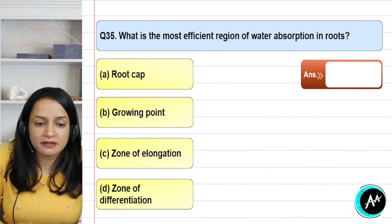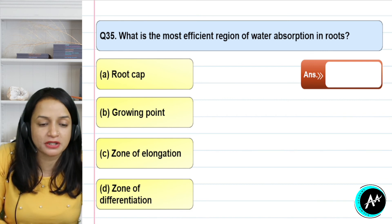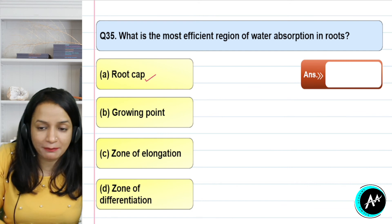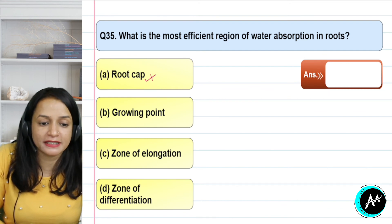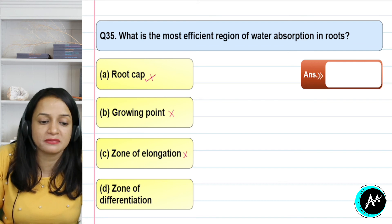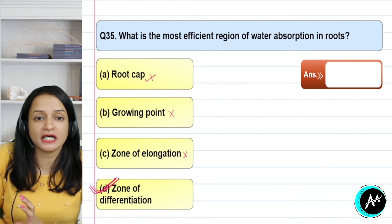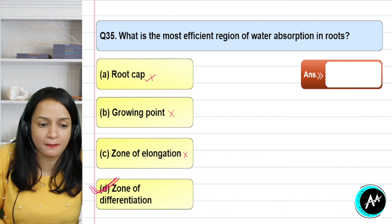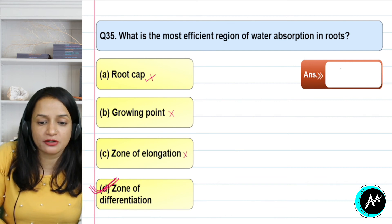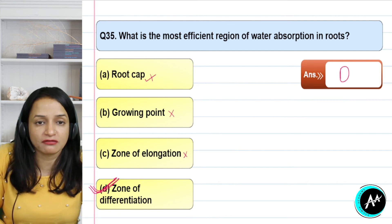Question 35: what is the most efficient region for water absorption in the root? Root cap is not involved — it protects. Growing point is not the most efficient. Zone of elongation is not possible. The zone of differentiation is the correct region because root hairs are present there, increasing the surface area for water absorption. The correct answer for question 35 is option D — zone of differentiation.